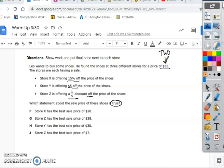So, store X is offering 15% off. So, $35. And what do we do with this? Change that percent to a decimal and multiply. So, 15%. We move it 1, 2. So, it'll be 0.15.